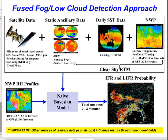The fused approach mitigates weaknesses in the individual predictors. For instance, satellite measurements are not very useful for diagnosing fog and low cloud when multiple cloud layers are present. Model fields tend to struggle with depicting small-scale fog events, like valley fogs. The fusion process allows for confident identification of IFR conditions even when one of the individual predictors fails at highlighting the potential for IFR conditions.